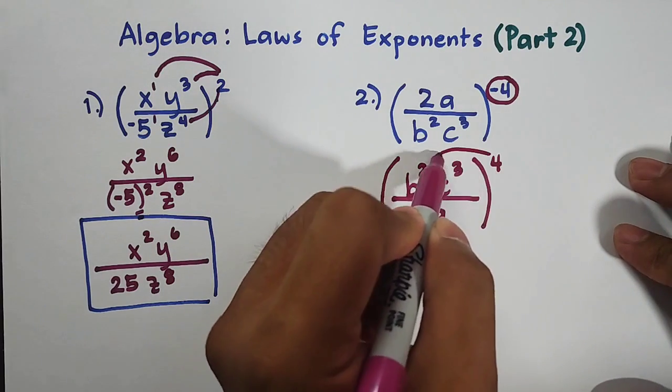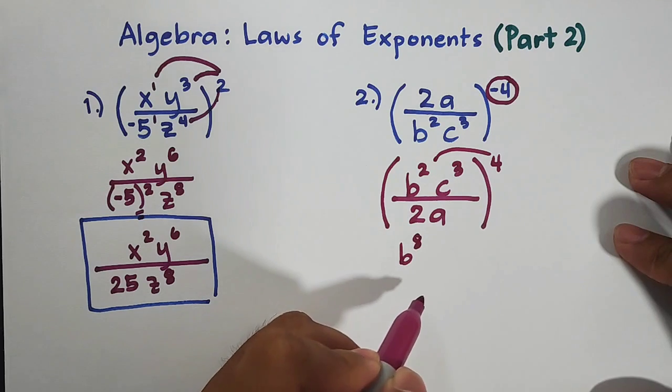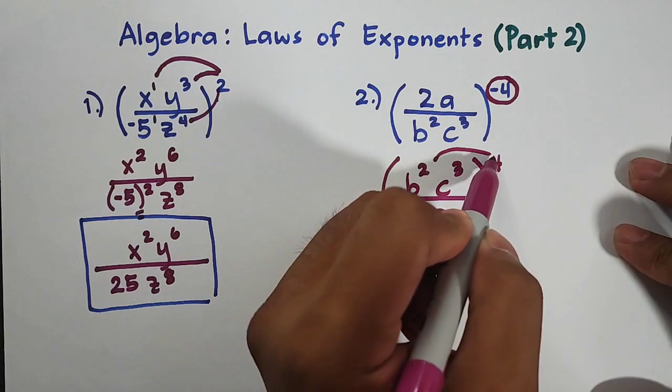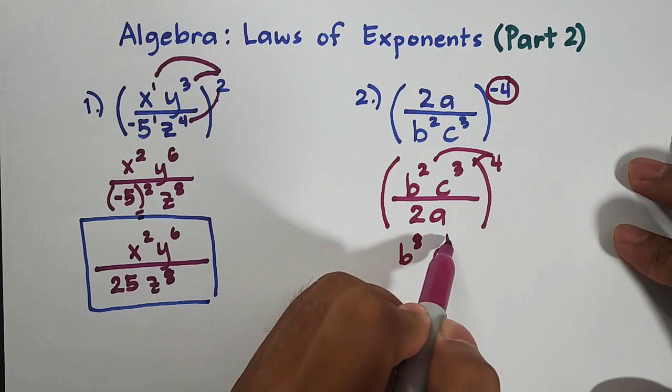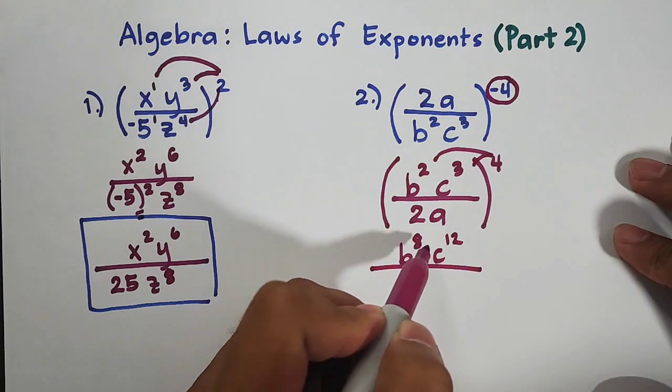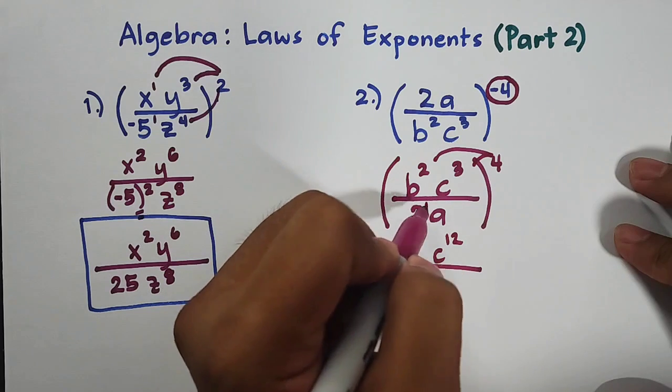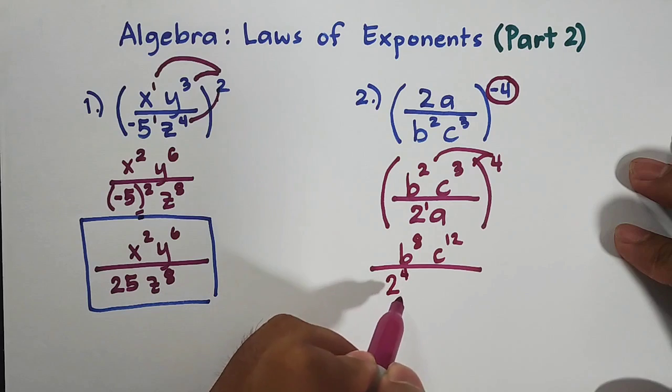So we have here 4 times 2, that is b raised to 8. For the c variable, c raised to 3 times 4, which is equal to 12. Over your base 2, it has an exponent of 1. So that is 2 raised to 1 times 4, which is equal to 4. That is 2 raised to 4.